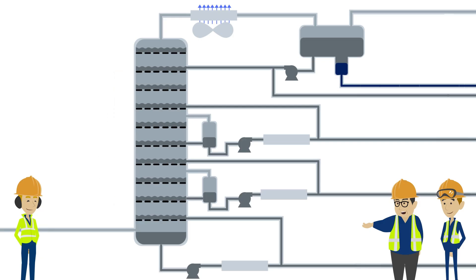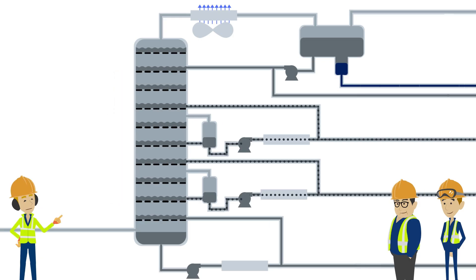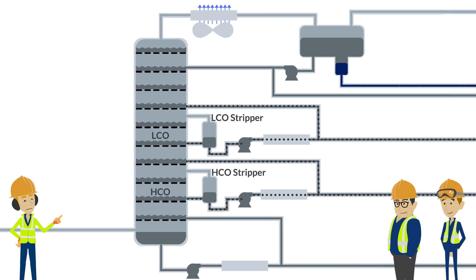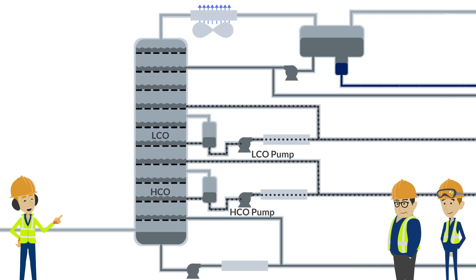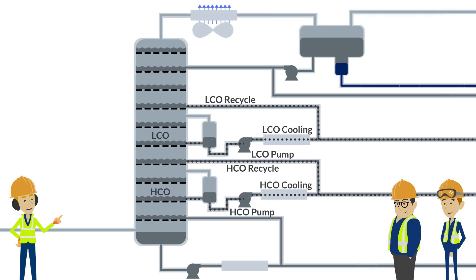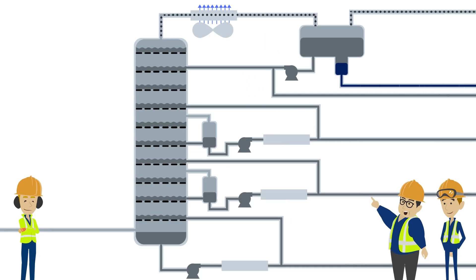As you move higher up the tower, the lower temperature causes lighter products to condense into liquids. Heavy cycle oil and light cycle oil flow out of the tower to a stripping vessel, which helps to remove entrained vapors. Vapors stripped from the liquid flow back into the tower, and the liquids are pumped out, cooled, and then recirculated to the tower or sent downstream for further treatment.